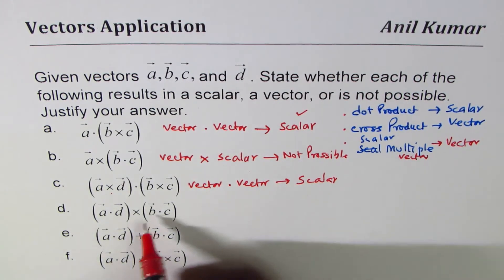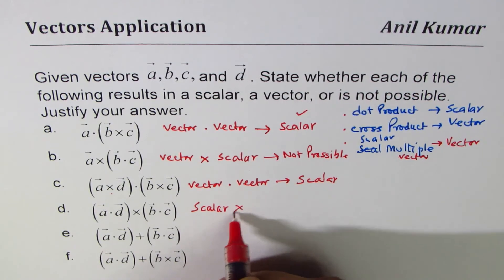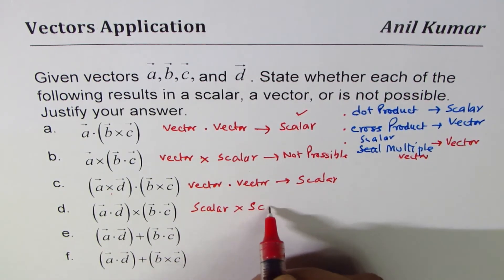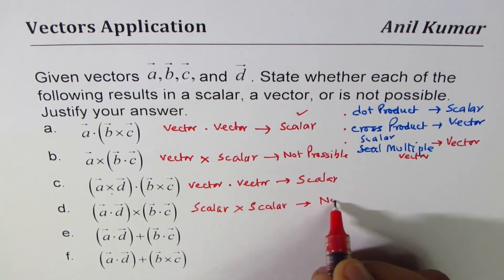Now here we have two dot products on the sides with scalar multiplication, right? So this is scalar × scalar. Can you do cross product with scalars? No you can't. So that is not possible.